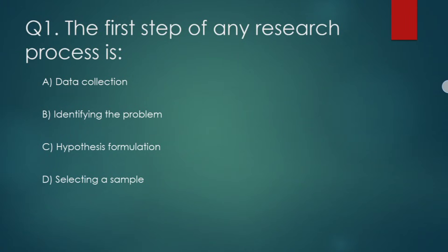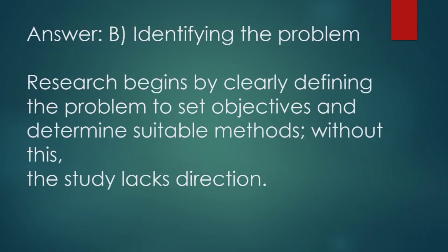The first step of any research process is: (A) data collection, (B) identifying the problem, (C) hypothesis formulation, (D) selecting a sample. Correct answer: option B — identifying the problem. Research begins by clearly defining the problem to set objectives and determine suitable methods. Without this, the study lacks direction.